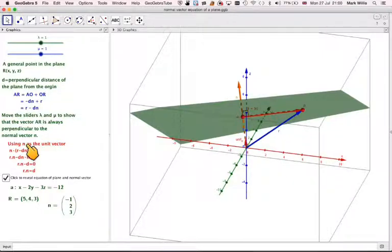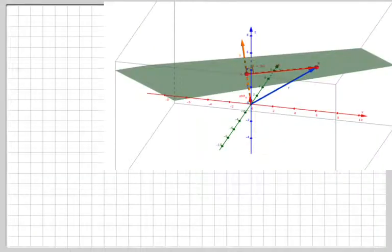We're just going to run through this here, but I'll run through it a bit more slowly for you. Going to this, let's just repeat. This is a general point in the plane, x, y, z.